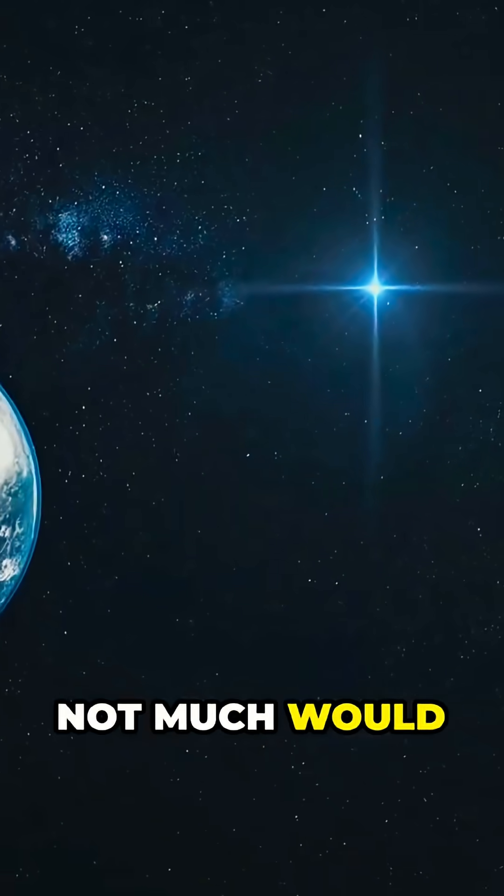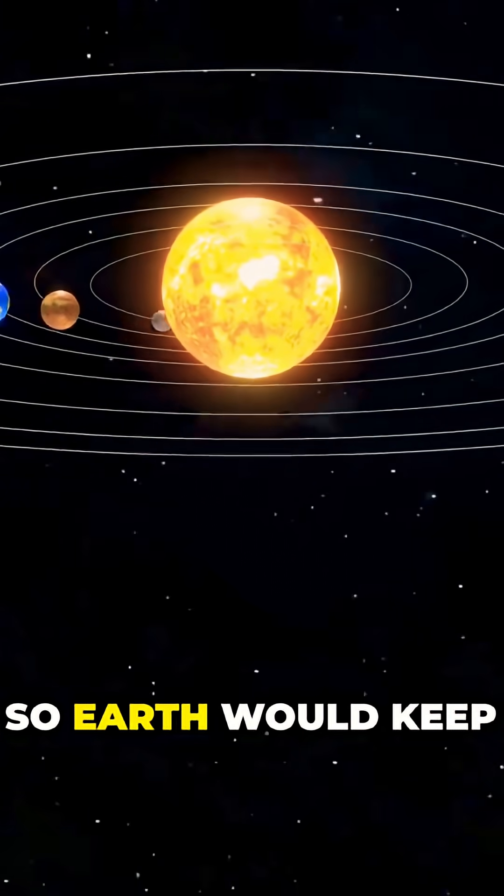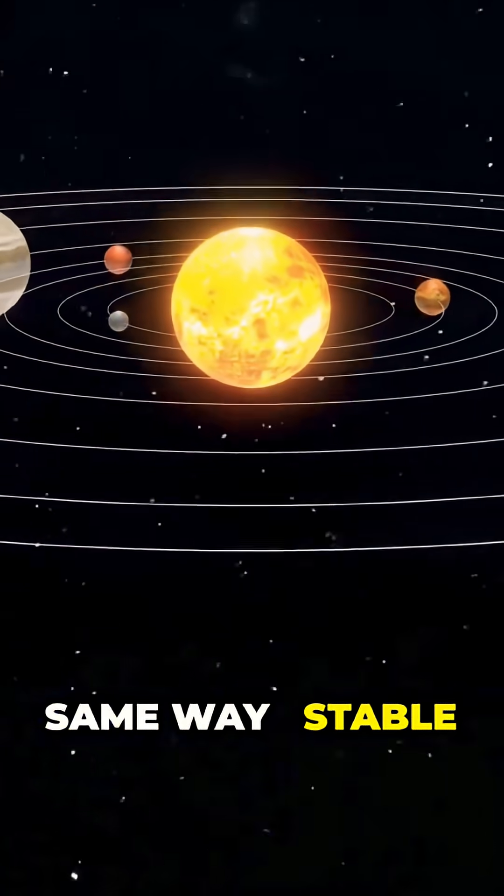Surprisingly, not much would change at first. The Sun contains nearly all the mass of our solar system, so Earth would keep orbiting almost the same way, stable and calm.